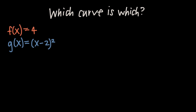Where things really get tricky is when we don't have a picture of the curves and we've only been given the equations of the functions themselves. In this example we have f equals 4 and g equals x minus 2 quantity squared, but we don't have a picture of either curve. So when that's the case, how do we figure out which curve is on the top and which one is on the bottom?